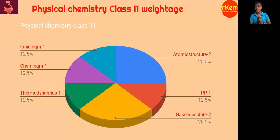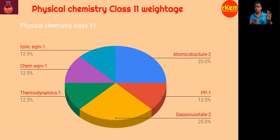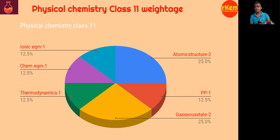Let's see the weightage of physical chemistry class 11. For atomic structure, two questions are asked. The topics to revise are the Bohr model with four formulas: radius, energy, velocity, and time period — learn these by heart. You will get one compulsory question from these. Also cover quantum numbers and nodes to get the other question.